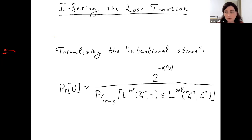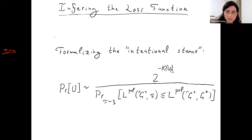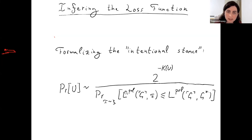The usual problem is that for any agent you can say its utility function is just 'do whatever you're doing' — a contrived, uninformative answer. But here, because we add description complexity penalties, we avoid this. The probability of a utility function is proportional to 2 to the minus Kolmogorov complexity of the utility function, divided by the probability that a random policy achieves a loss smaller than the agent achieves. So we assign more probability to loss functions for which the agent does better than most policies, penalized by the complexity of the loss function.